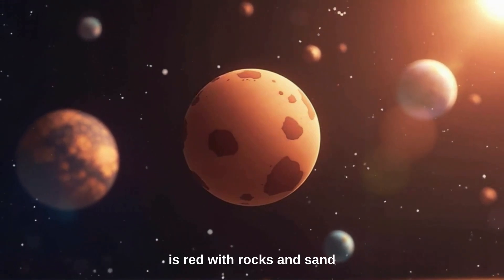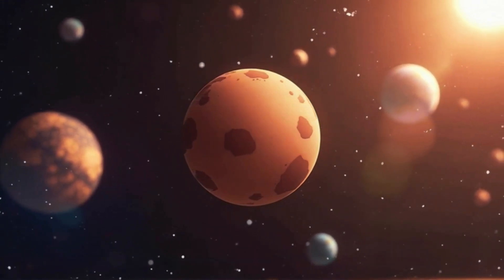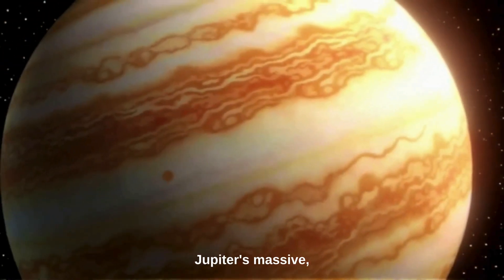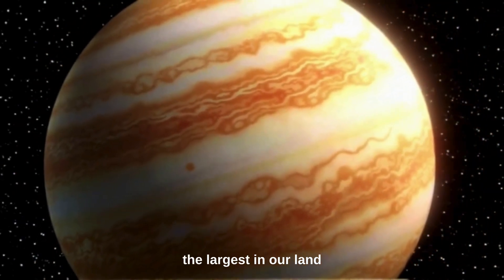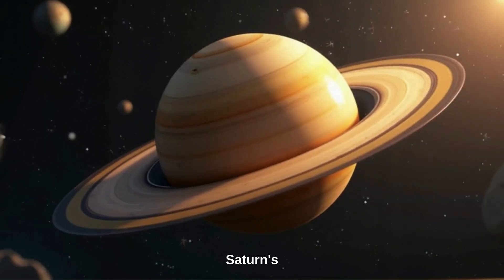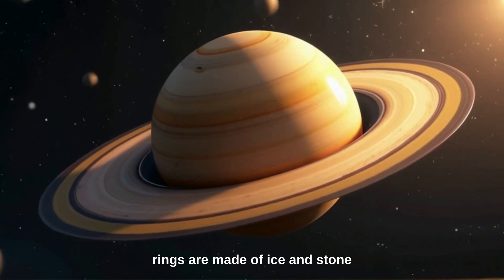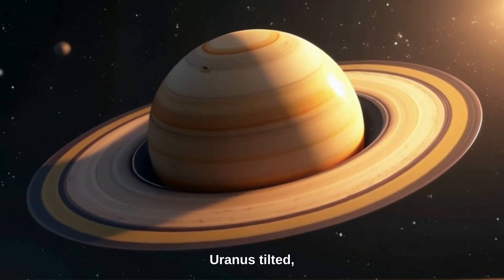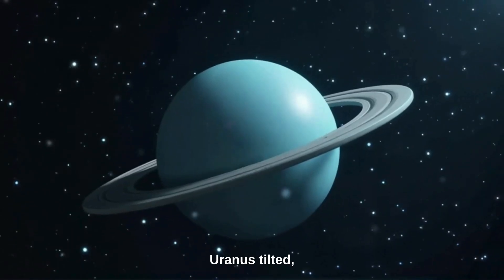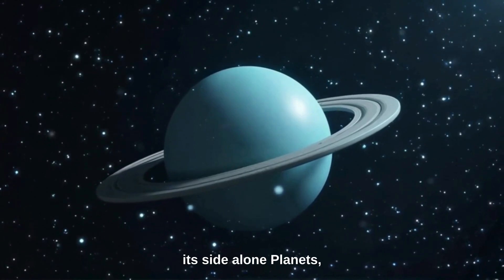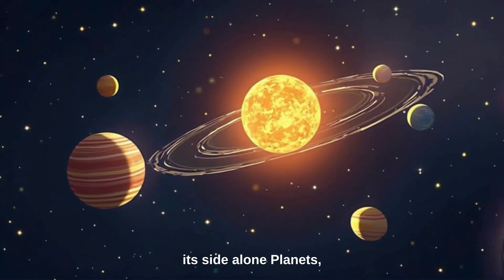Mars is red with rocks and sand. Jupiter's massive, the largest in our land. Saturn's rings are made of ice and stone. Uranus, tilted, spins on its side alone.